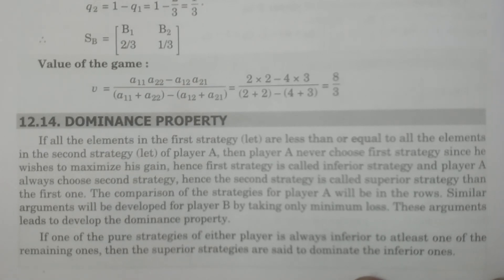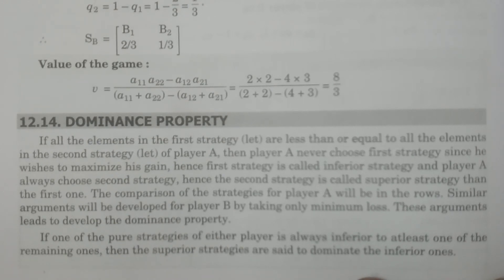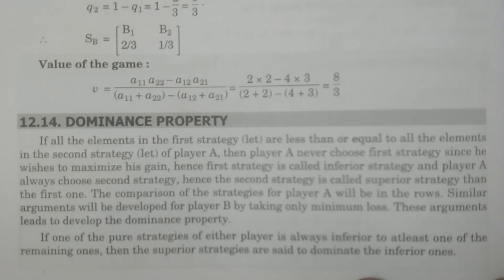Similarly, the same arguments apply to player B. Player B deals with losses. For example, 4 rupees loss and 2 rupees loss — which strategy will player B select? Always 2 rupees loss. So that kind of strategy dominates another particular strategy; one is dominated by the other. So that is called the simple dominance principle.